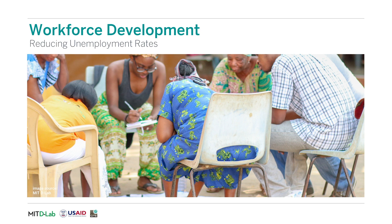In workforce development, machine learning can reduce unemployment rates by pairing skilled individuals with appropriate jobs. For example, in India, hiring managers pay more attention to credentials than skills, making it difficult for uncredentialed people to get hired or promoted. Aspiring Minds is an Indian company that has developed a computer test that determines applicants' strengths and connects them to better-paying jobs.